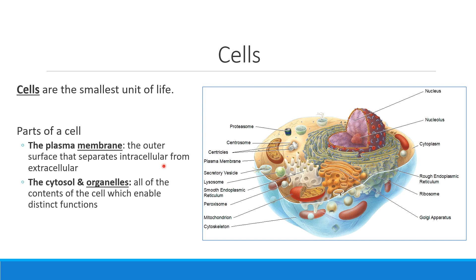The stuff on the inside is called the cytosol, which is the soupy stuff, and the organelles, which are the functional machines inside a cell. These are components inside the plasma membrane. We also have inside a cell this large central area called the nucleus. The nucleus, surrounded in its own nuclear membrane, is where we keep our DNA — our directions for life, very well protected in the middle of the nucleus.